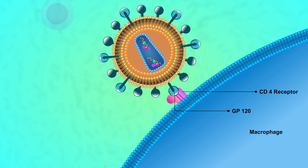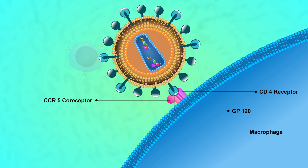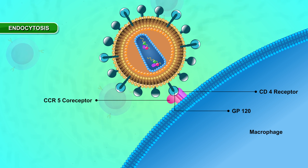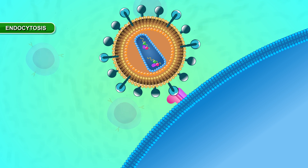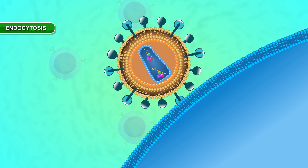A second receptor protein, CCR5, must also be present on the macrophage for the virus to enter the cell by endocytosis.